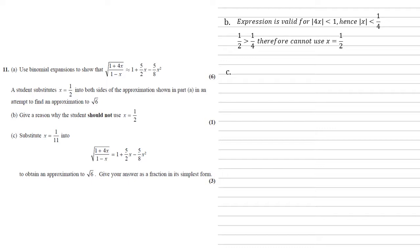Now for part c, we're going to substitute x equals 1 over 11 into what we've just found to obtain an approximation to root 6. So substituting an eleventh in, we get this. Note how I've put one eleventh into both sides of the equation. Simplifying again gives us root 3 over 2 is equal to 1183 over 968.